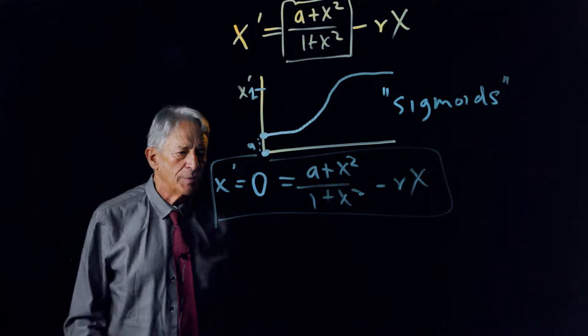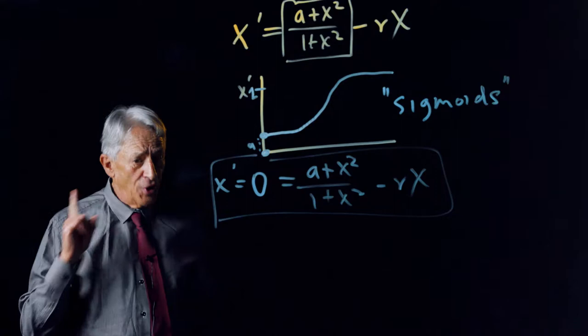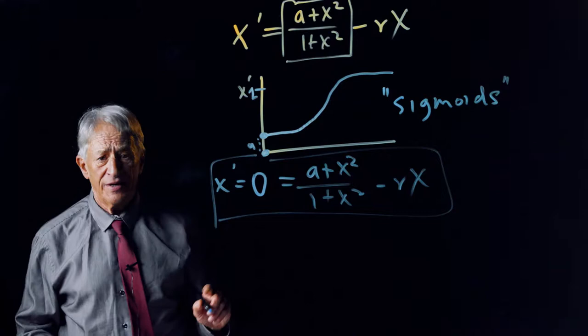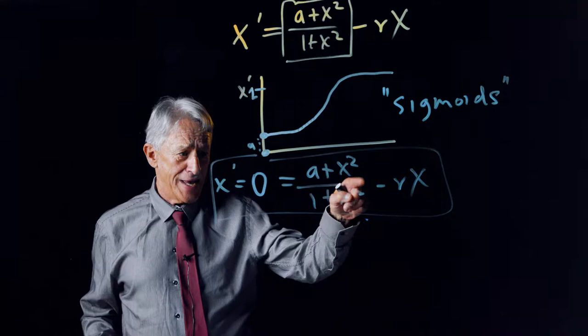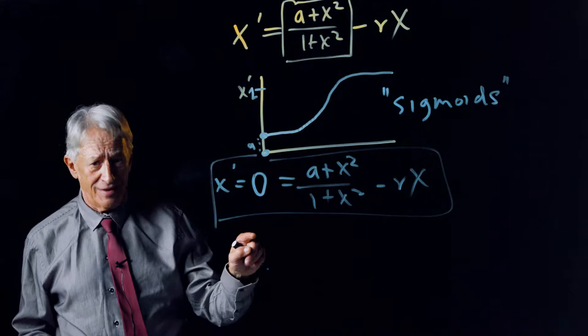And now we have a problem. Notice, for example, that x equals 0 is not an equilibrium point of this system. When x equals 0, this term is equal to a, and this term is equal to 0, so x prime is not equal to 0 at x equals 0.